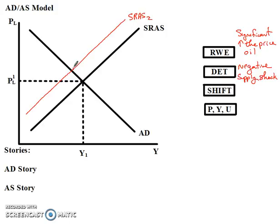Now when the short-run aggregate supply curve shifts to the left, as companies begin to reduce production, production begins to decline. When there are fewer goods and services available, that's going to cause the price of those goods and services to begin to rise, and we're going to get some inflation. Prices are going to begin to rise.